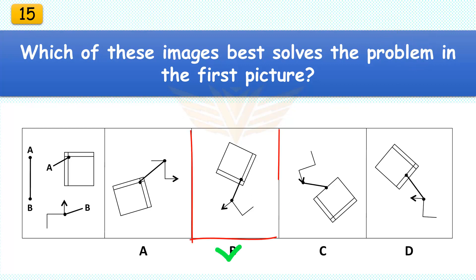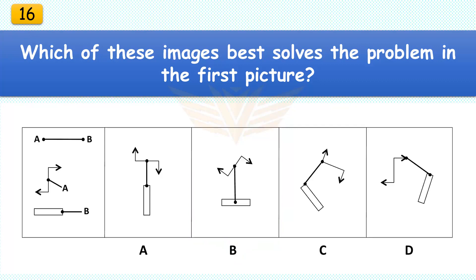Which of these images best solves the problem in the first picture? The correct answer is B. Rotate the two elbow arrow 135 degrees and then rotate the half frame almost 180 degrees.